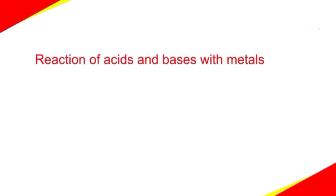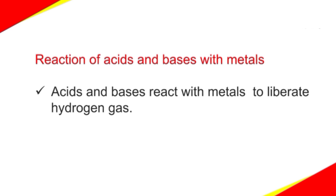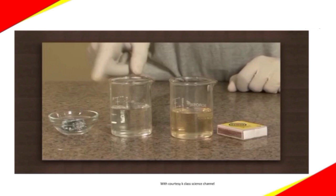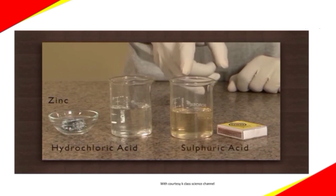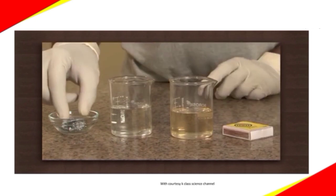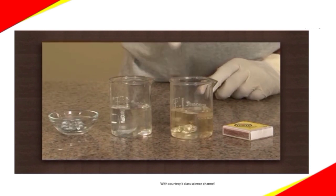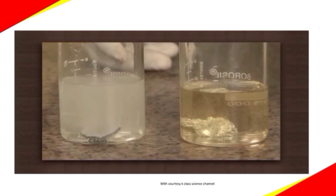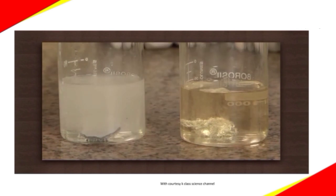The next property is reaction of acids and bases with metals. What happens when an acid or a base reacts with a metal? Acids and bases react with metals to liberate hydrogen gas. For this activity we need zinc granules, hydrochloric acid, sulfuric acid, and a matchbox. Let us drop few zinc granules into the acids. These zinc granules react with the acids and liberate a gas.